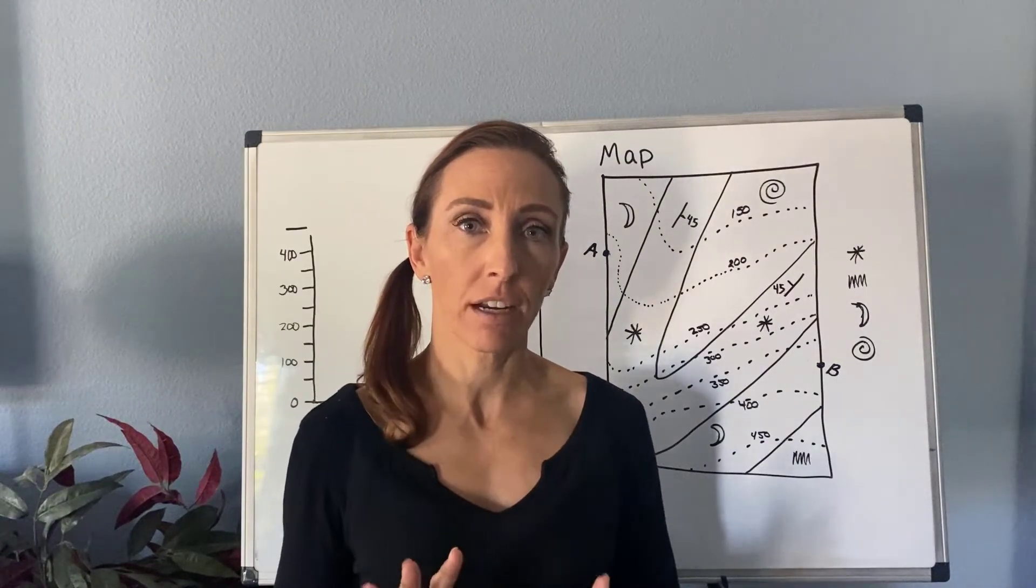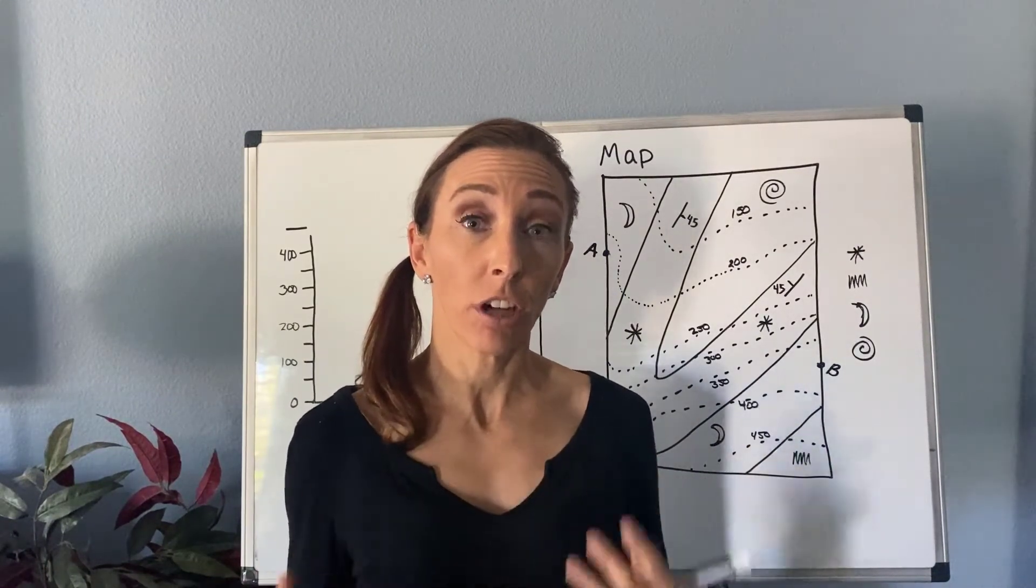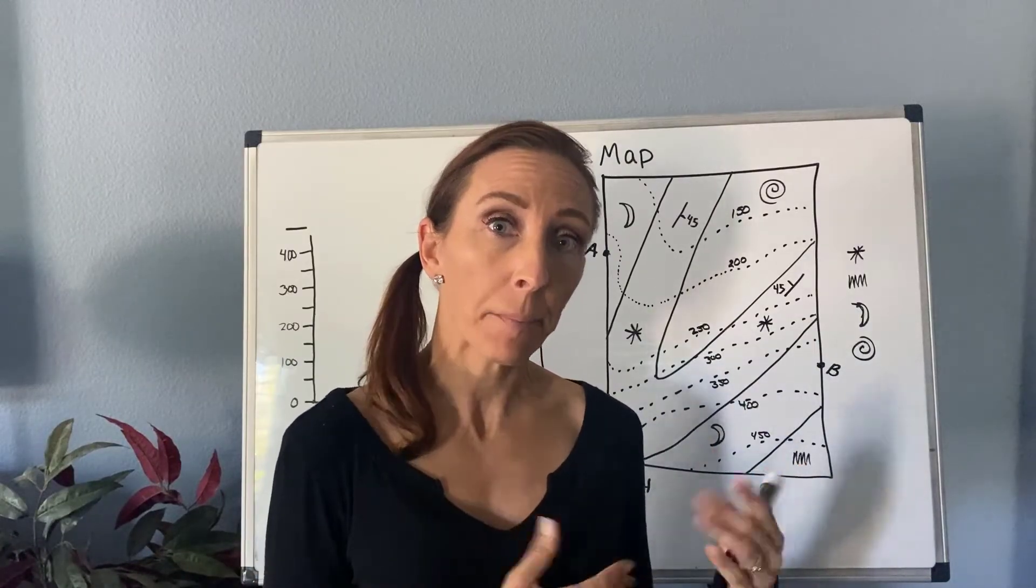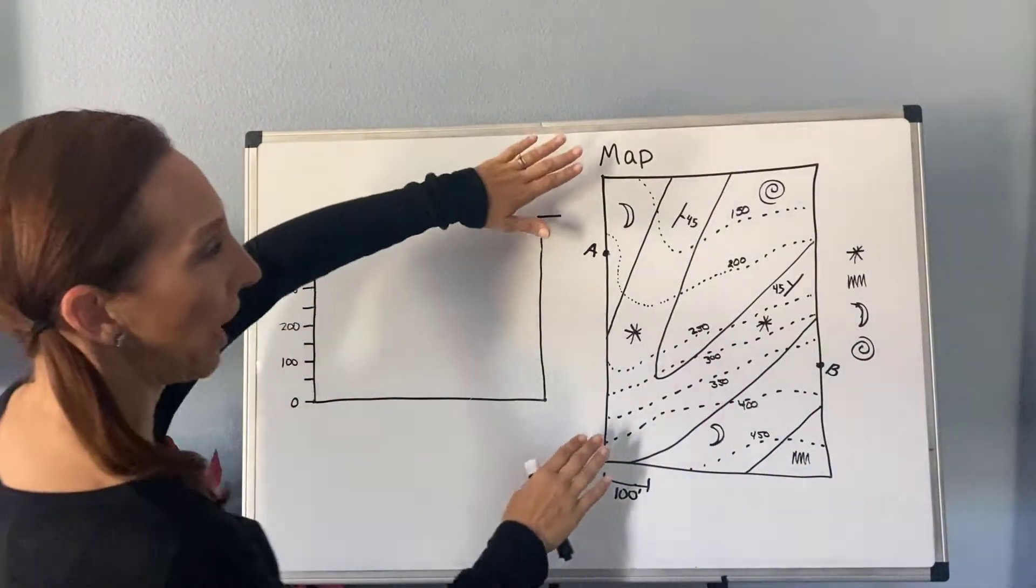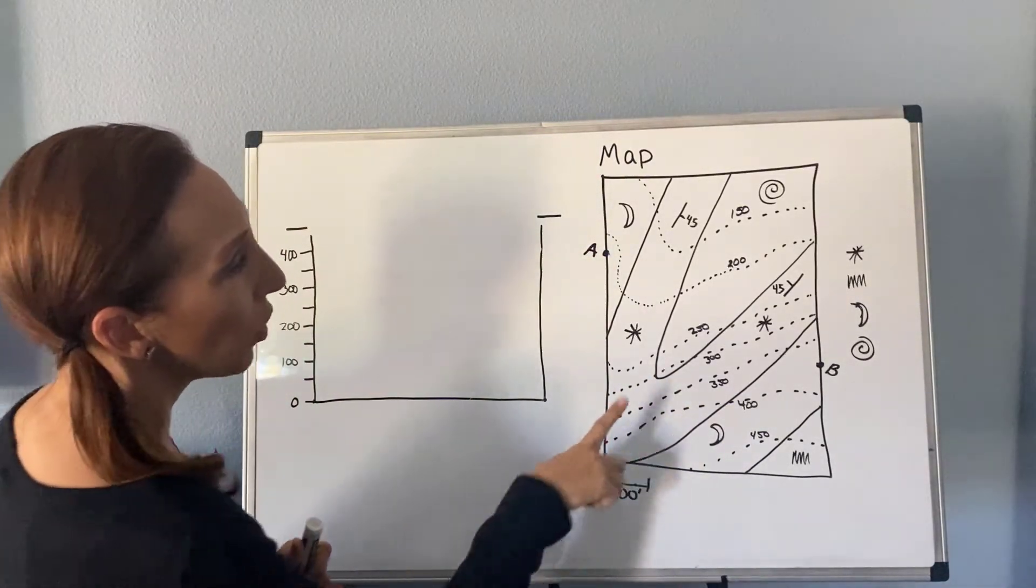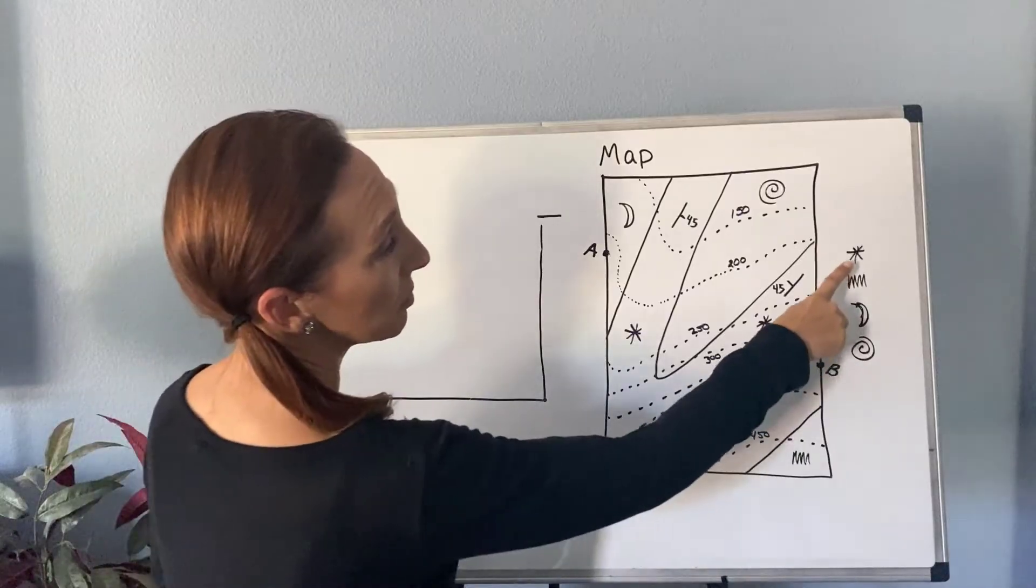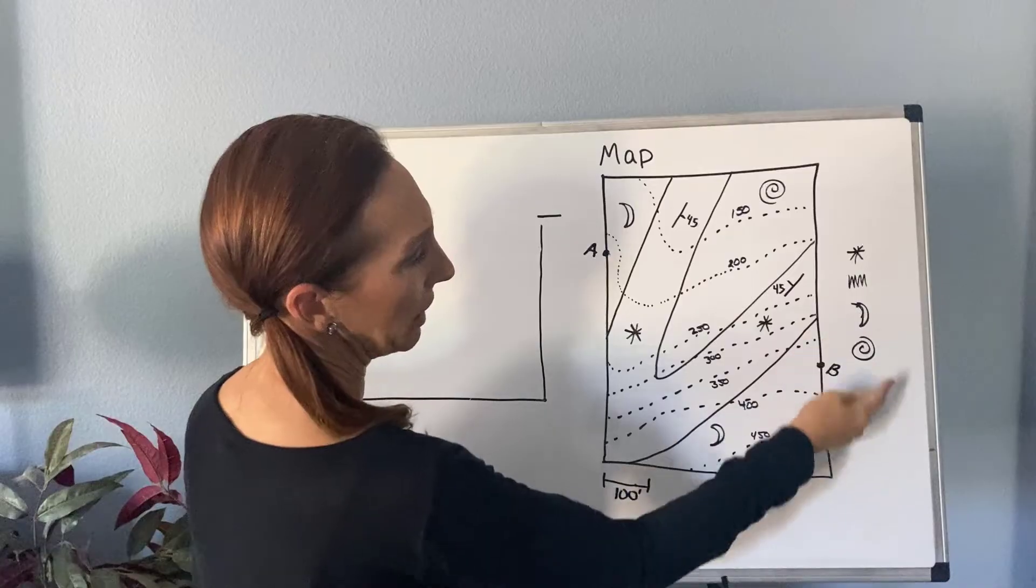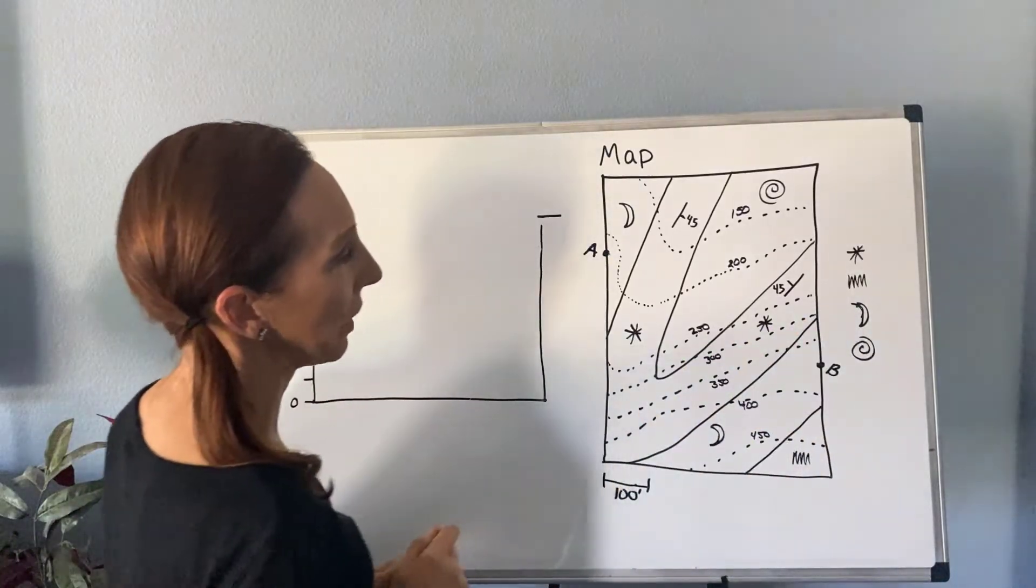I want to teach you how to construct a geologic cross-section with a topographic profile from a geologic map. So the idea here is that we have a geologic map, and if we look at it, a couple things we notice. We have several units marked here, and that's in no particular order, so this asterisk, the squiggle, this kind of banana moon shape, and this spiral.